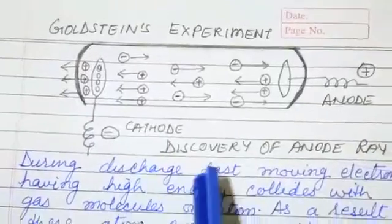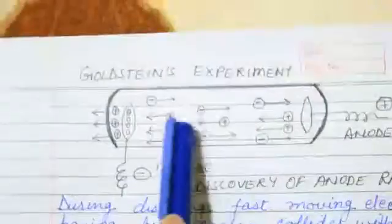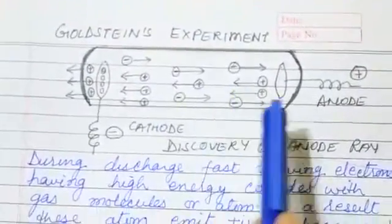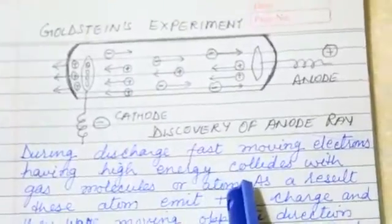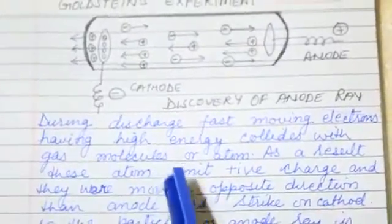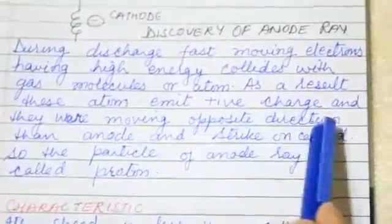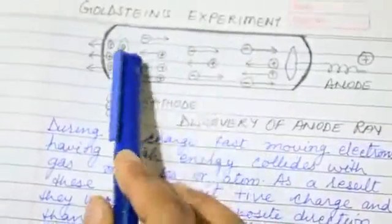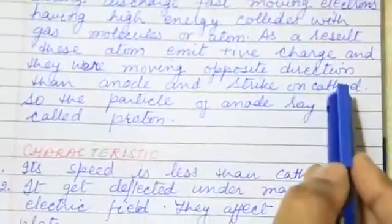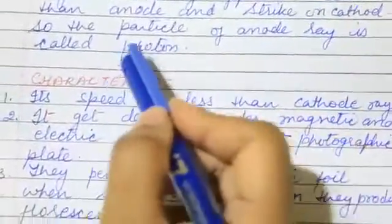During discharge, fast moving electron having high energy collides. The gaseous molecule moves in a fast manner and collide with each other with the gas molecule or atom. As a result, these atoms emit positive charge. And they were moving opposite direction than anode, moving to the cathode, strike on cathode. The particle of anode ray is called proton.